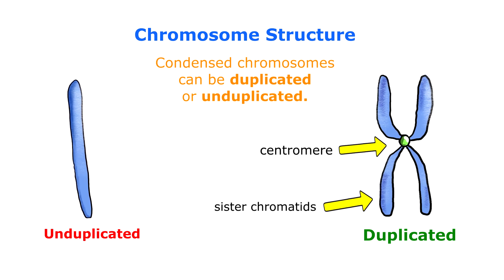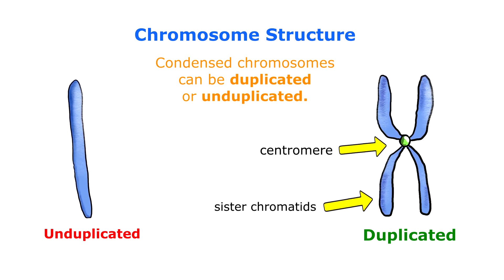To summarize: chromatin is a complex of DNA and protein that makes up chromosomes. The centromere is in the center and holds the chromatids together. Sister chromatids are a chromosome and its duplicate attached to one another by a centromere, and they are separated during the process of mitosis.